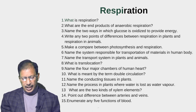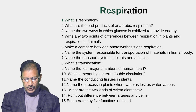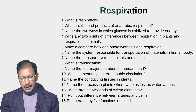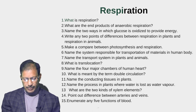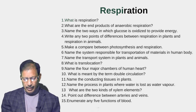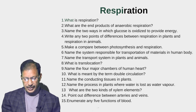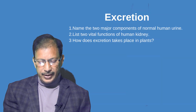Name the system responsible for the transportation of material in the human body. Name the transport system in plants and animals. What is translocation? Name the four major chambers of the human heart and what is meant by the term double circulation. Name the conducting tissues in plants. Name the process in plants where water is lost as water vapor. What are the two kinds of xylem elements? Point out the difference between arteries and veins.